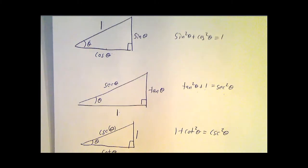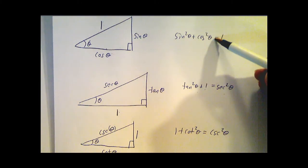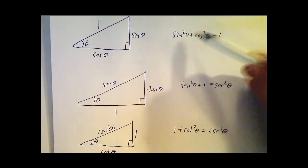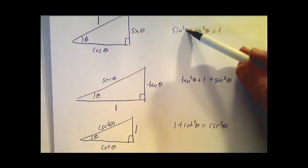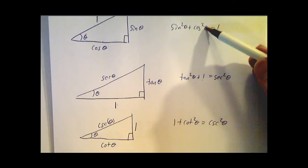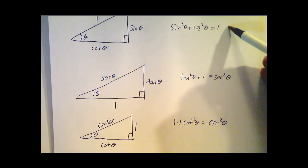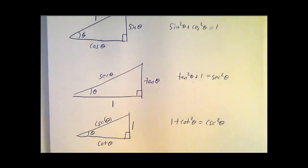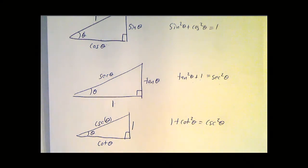Which you could also get by taking this equation and dividing everything by sine squared. Sine squared divided by sine squared is 1, cosine squared divided by sine squared is cotangent squared, 1 over sine squared is cosecant squared. So those are the basic trig identities, we'll get to the fancy ones next time.